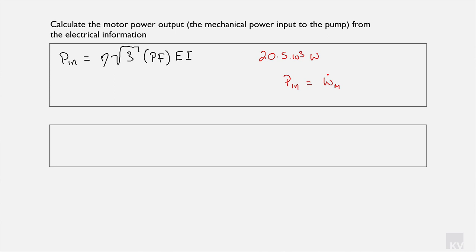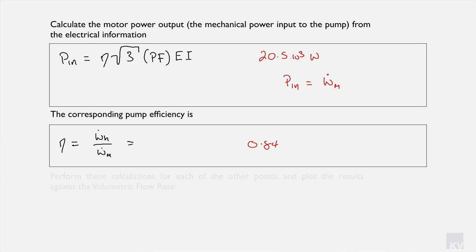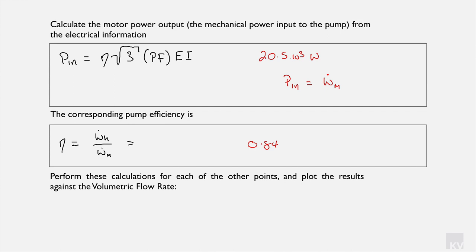The final step is calculating the system efficiency, given as the work required to develop the head divided by the work the motor does in driving the pump. That efficiency equals 0.84. Those are the calculations required for this problem; producing the plots is simply a matter of repeating these calculations for each row of data. In our next session, we will look at how to construct velocity triangles, perform basic calculations associated with them, and identify what is happening within the impeller.